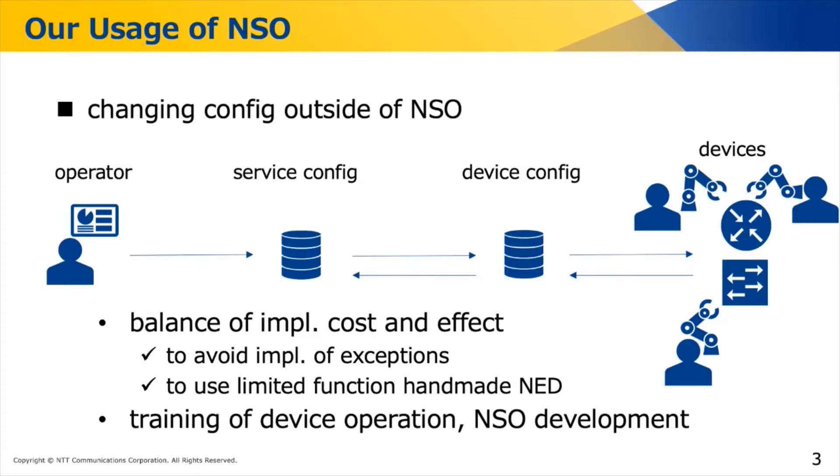At almost all projects, especially Greenfield, operators use only NSO terminals or API to control devices — the data stream is one direction. However, their project is different. In their environment, they want to change config manually outside of NSO. Some operators modify service config while at the same time other operators modify devices manually. They named this situation 'flowing brownfield.'